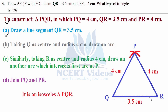Step B: Taking Q as center and radius 4 cm, draw an arc — make it large enough so another arc can intersect it. Step C: Without changing the radius, put the needle on point R and draw an arc that intersects the first arc at point P. Join PQ and PR. You get isosceles triangle PQR, which is the answer to the second part of this question.